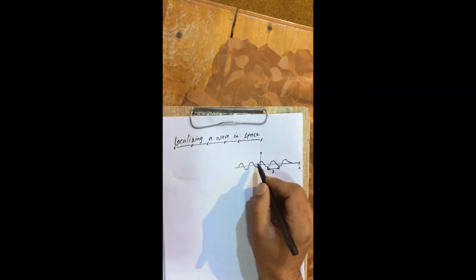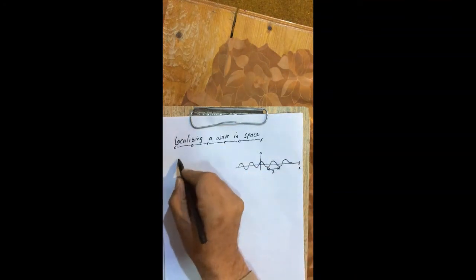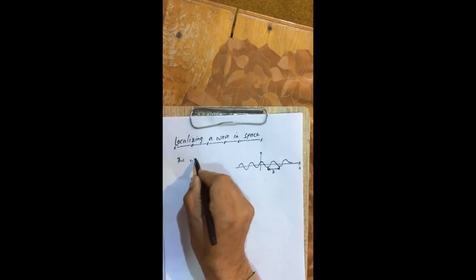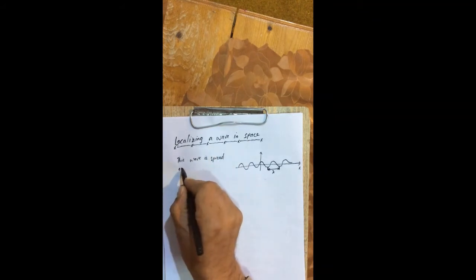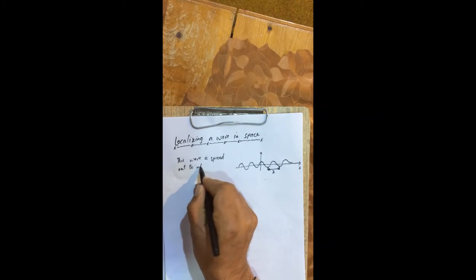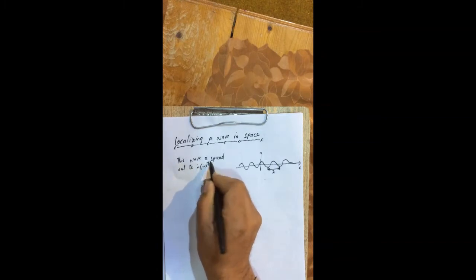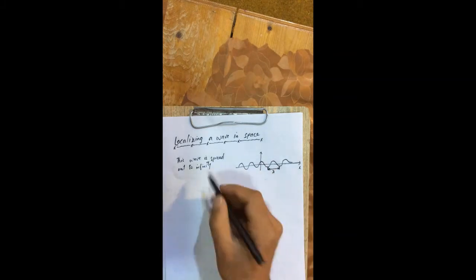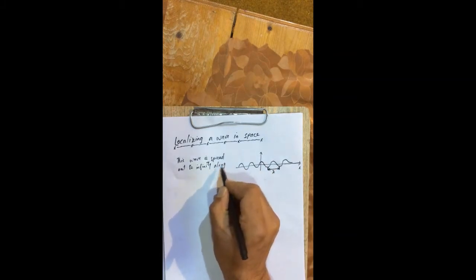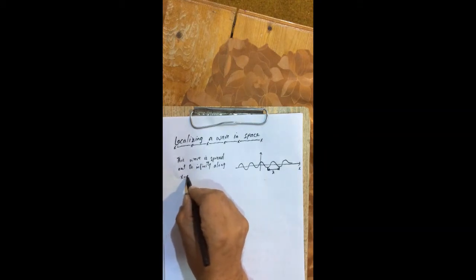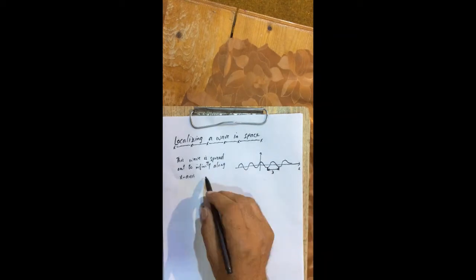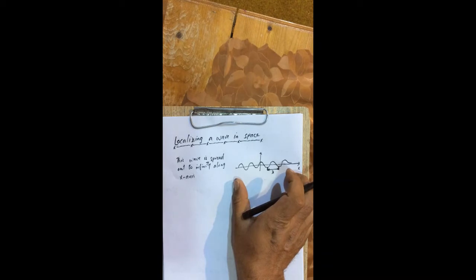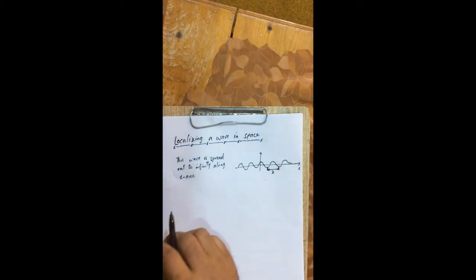Now this wave is spread out to infinity along the x-axis. The spreading is in both directions along the x-axis, but here I draw just a small portion of this wave.